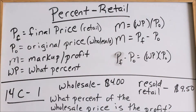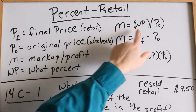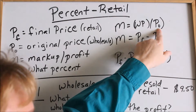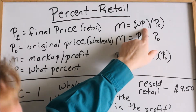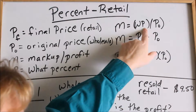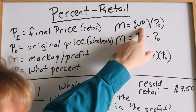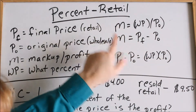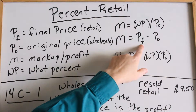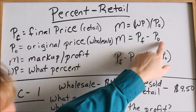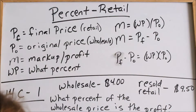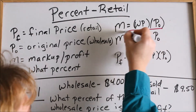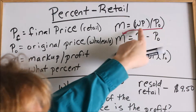Here are some equations we can use. How does a store get a markup price? They take the original price and multiply it by a percent — for example, they marked it up by 20%. That's their profit: M equals WP times P_O. Or if you know the final price, you take the final price minus the original price — retail minus wholesale — and that also gives you the markup. So both expressions stand for markup M.